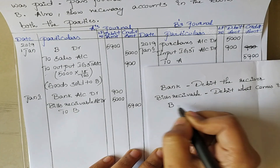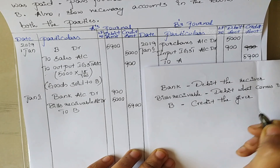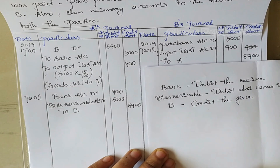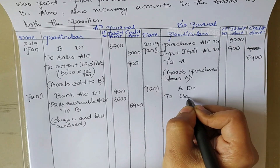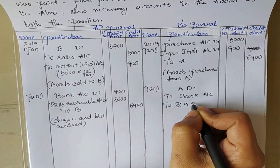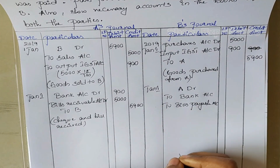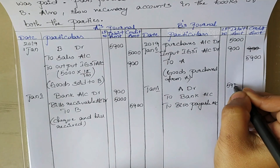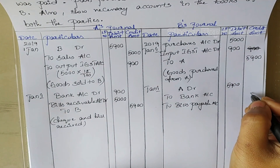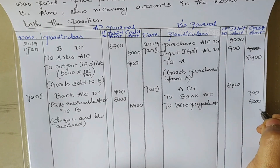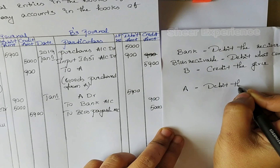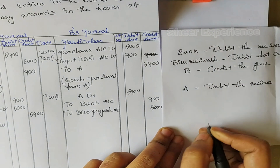Here we are crediting B because B is the giver — in other words, asset is decreasing so we need to credit it. Journal entry in B's books is: A debit to Bank Account, to Bills Payable Account. For Bank we credit 900, for Bills Payable we credit 5000, and for A we debit 5900. We are debiting A because A is the receiver.